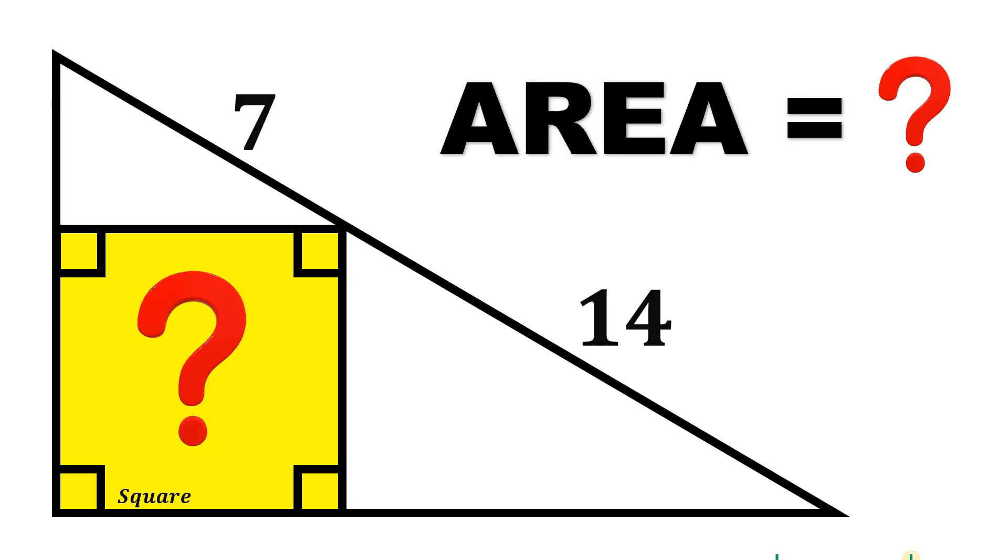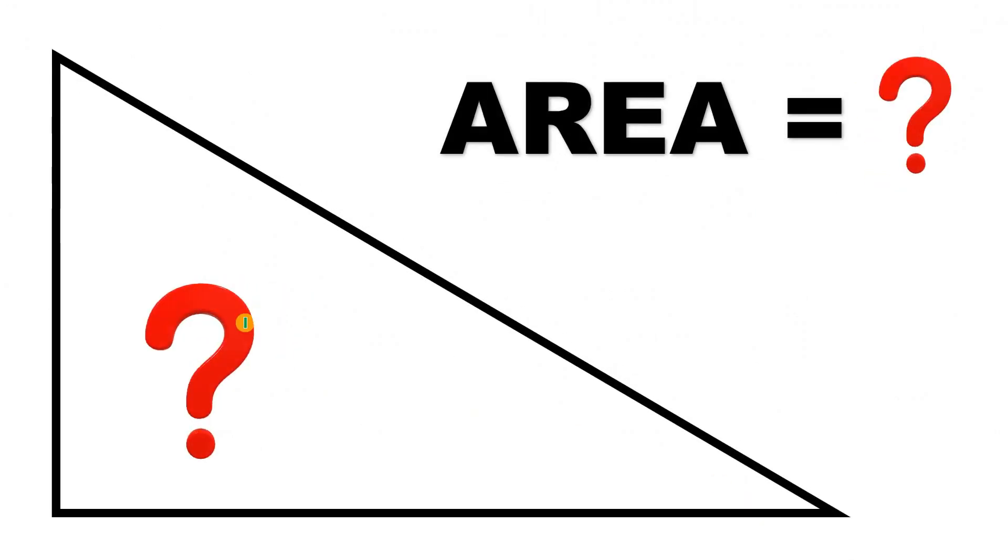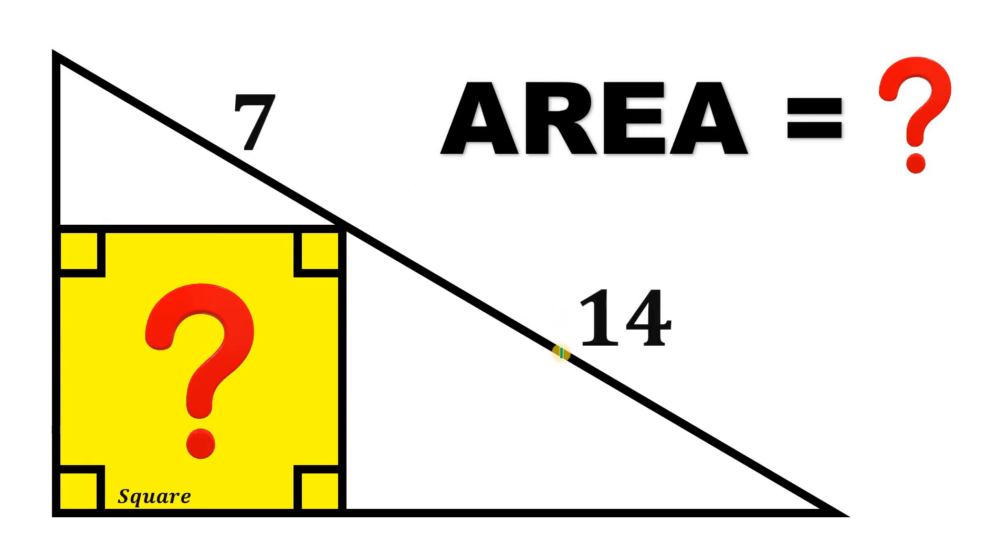Can you solve this geometry challenge? Here's the question. Given this rectangle, now let's draw a square inside of it and this segment measures 7 units and this segment measures 14 units. Now the question is what is the area of this yellow square?